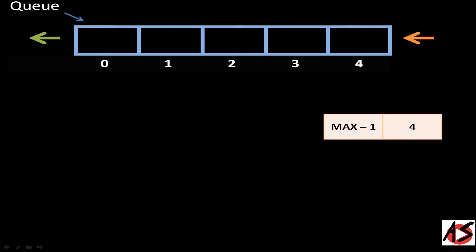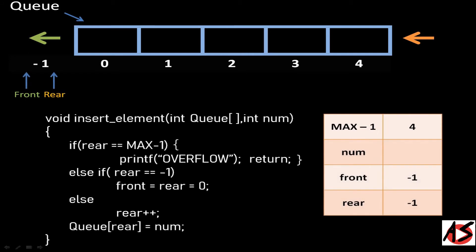Deletion in the Queue is only possible from the front or head end, so we use a front pointer to keep track of it. Here, front and rear pointers are set to minus 1 because the Queue is empty. We list out all the variables here to keep track of value changes during the execution of the program.